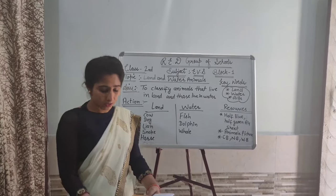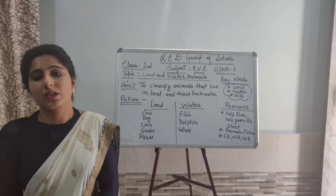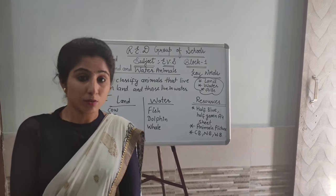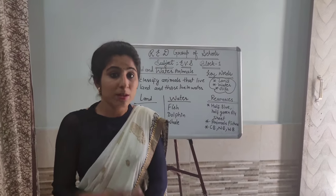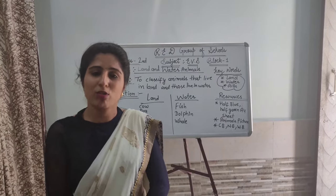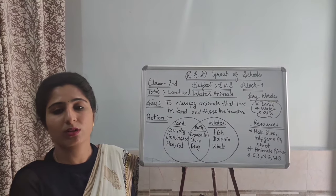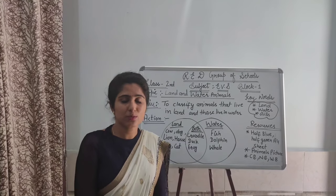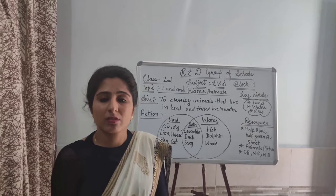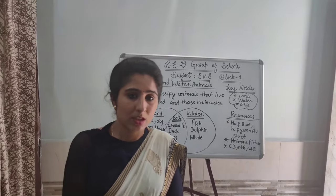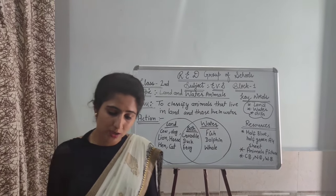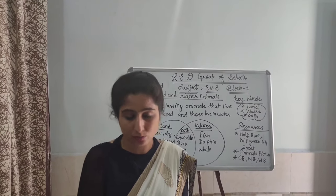Dolphin and whale live in water only. Which of these animals can live on both land and water? Yes — frog! Have you seen a frog? Frogs can live in water and they can also live on land. Now, why are land animals different from water animals? Parents, please pause the video and let the students give their answer. Yes — because they are living in different places: land animals live on land and water animals live in water.